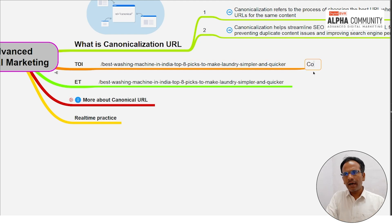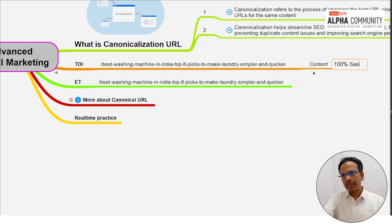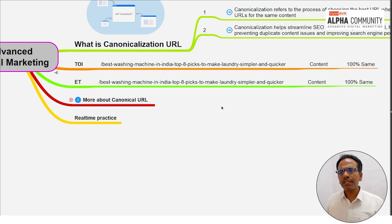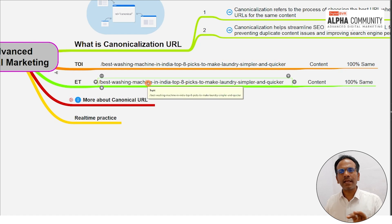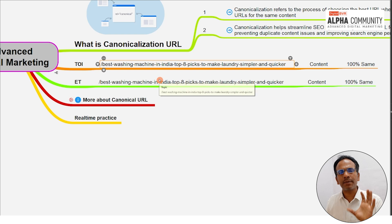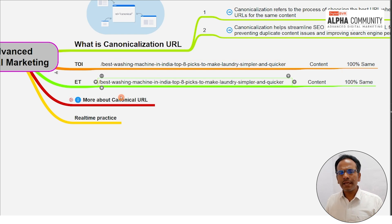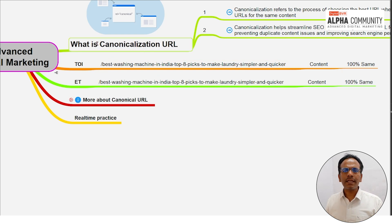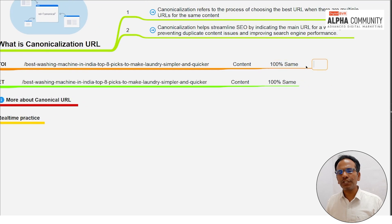When 100% same content exists across two websites, it becomes a big task for search engines to determine which website has the original content and which URL is the best. Identifying the original content URL is the challenge that canonicalization solves.